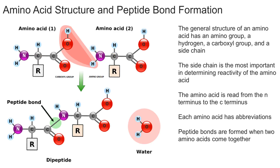The thing that sets amino acids apart is the side chain. R is the designation for the side chain, and the side chain is the most important thing in determining how reactive the amino acid is, what the amino acid will bind to, whether it's polar, nonpolar, etc.